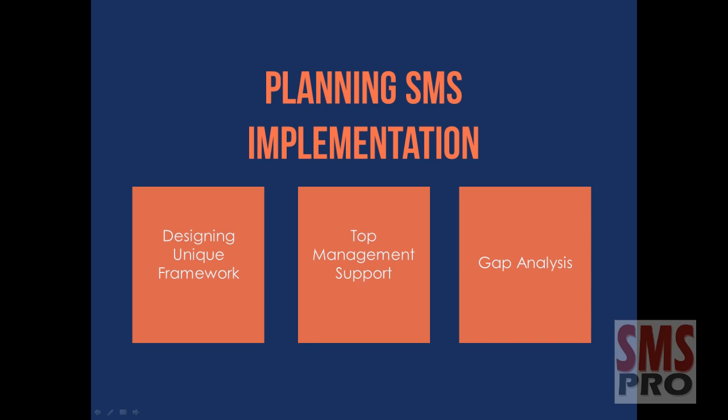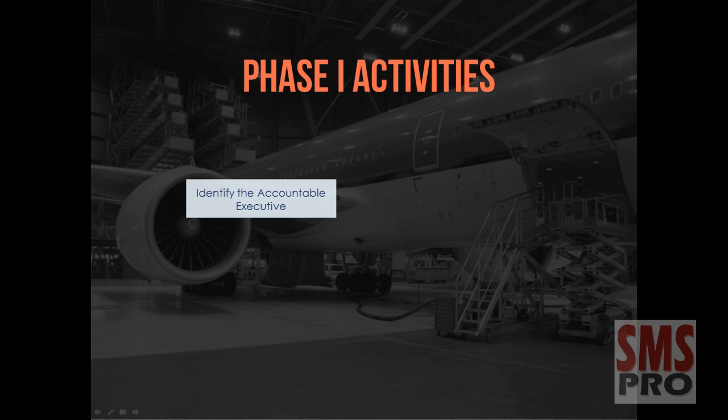Phase 1 of an SMS implementation plan should also include the gap analysis. From this gap analysis, Aviation Service Providers determine the current status of their safety management processes. Phase 1 of the SMS implementation process focuses on developing the accountability framework for your SMS program. This is the time to identify the accountable executive and assignment of responsibilities and safety accountabilities of key safety personnel, notably the managers.